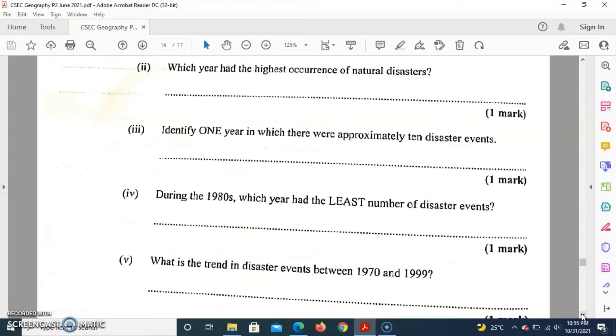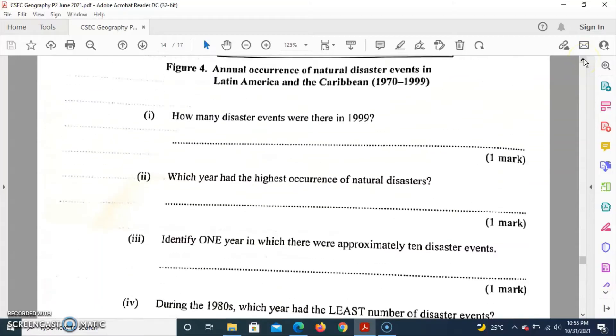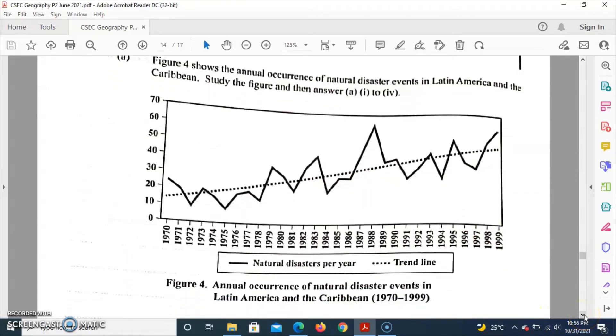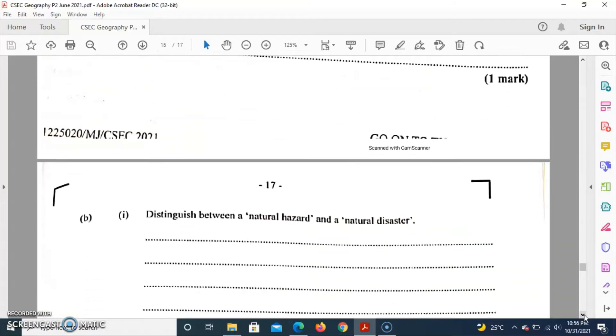Now we're to comment on the trend in disaster events between 1970 and 1999. Looking at the graph, the trend is that it fluctuates. At the beginning of the graph there was a decrease in the number of natural disasters and then it increased, it decreased. So there is a fluctuation in natural disasters between 1970 and 1999.